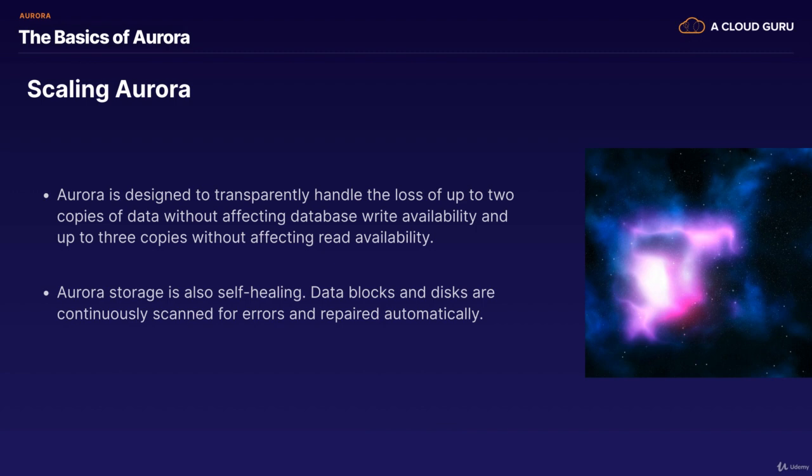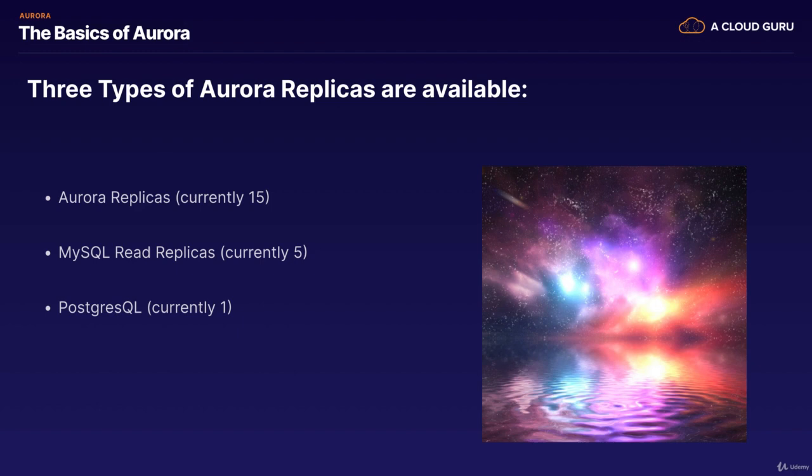Aurora is designed to transparently handle the loss of up to two copies of data without affecting write availability of your database, and up to three copies without affecting read availability. So you can lose a couple of availability zones and still not have any issues on performance. Aurora storage is also self-healing — data blocks and disks are continuously scanned for errors and repaired automatically.